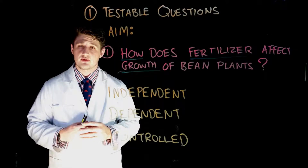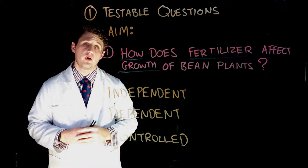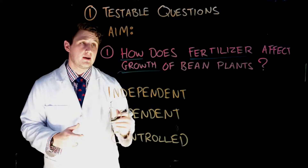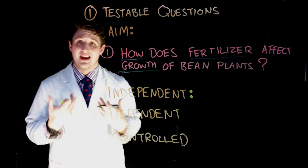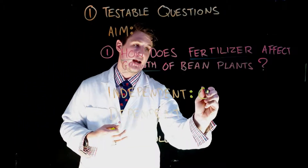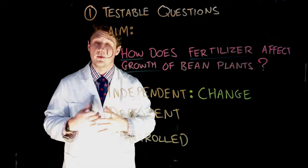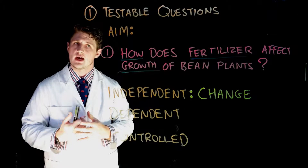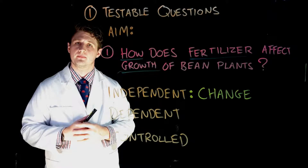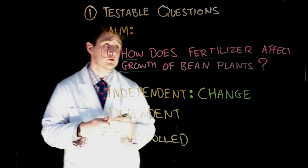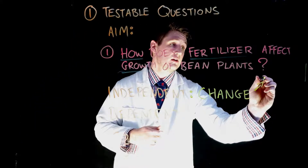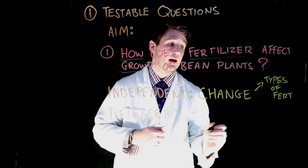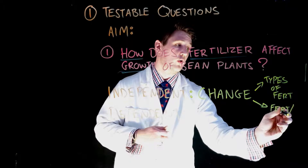Let's use our testable question to explain these three variables. First, the independent variable — just like the word 'independent' suggests being by yourself, it is the one thing we are going to change in this experiment. Looking at our testable question, what is the one thing we're going to change? Fertilizer — correct! In this case we might have different types of fertilizer, or we might have fertilizer versus no fertilizer.